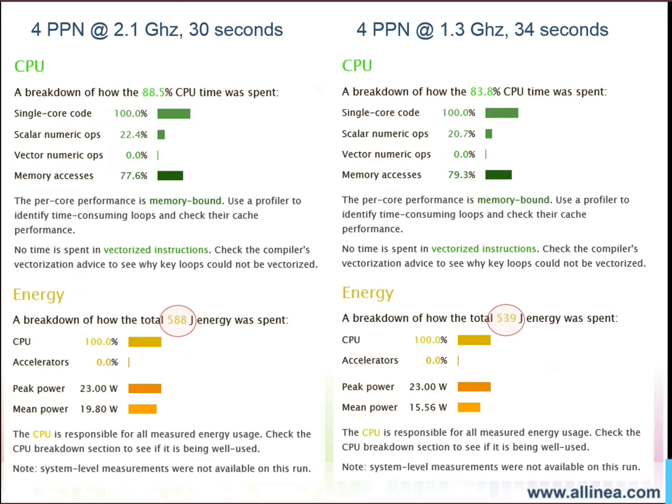Despite running for longer, it's using less energy — that's an interesting trade-off. You saved something like 15% on the energy. It's non-trivial. There are a lot of different things we can tweak here — the number of processes per node and so on. So I did the rest of the runs with CSV output from both reports, dumped it all into Excel, and made some graphs.